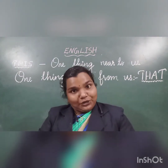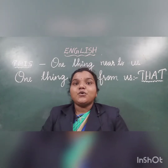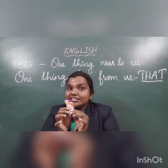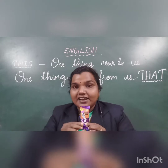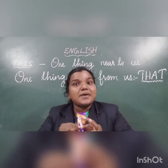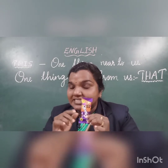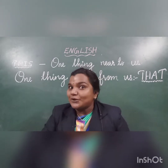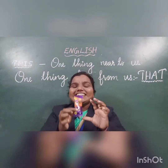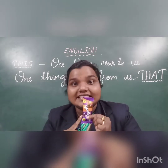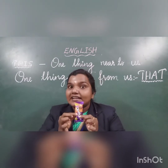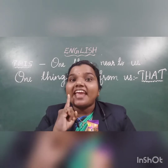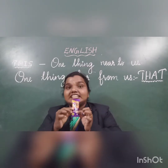I will show you some examples. First example — what is this? This is a chocolate. How many chocolates? Only one, near to us, हमारे पास है — one, singular. What is this? This is a chocolate. एक chocolate है, हमारे पास. Near to us. So we will use THIS. This is a chocolate.